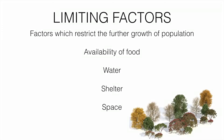The limiting factors of a growing population in an ecosystem include the availability of food, water, shelter, and space. With availability of all these things, the population will grow. These are the limiting factors for the growth of the population of any living organism.